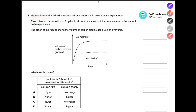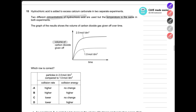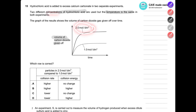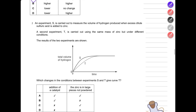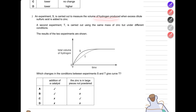Past paper question: hydrochloric acid is added to excess calcium carbonate in two separate experiments using two different concentrations of HCl at the same temperature. The graph shows volume of CO₂ given off over time. Is the collision rate higher for 2 mol/dm³ compared to 1 mol/dm³? Yes — the graph is steeper, so it's either option A or B. Since temperature is the same in both experiments, the collision energy did not change. The answer is A.